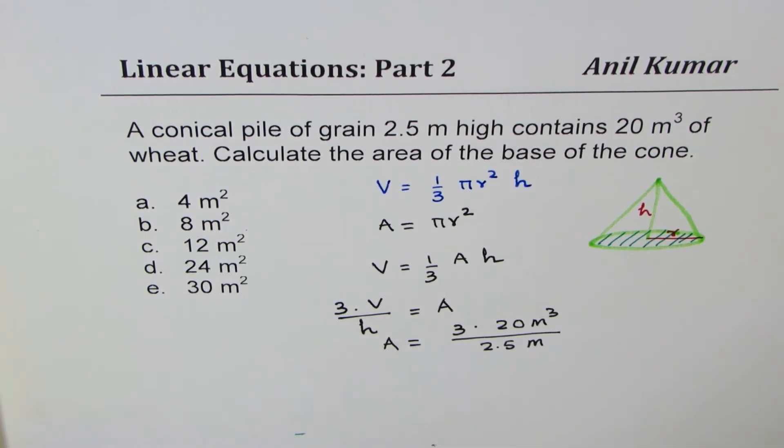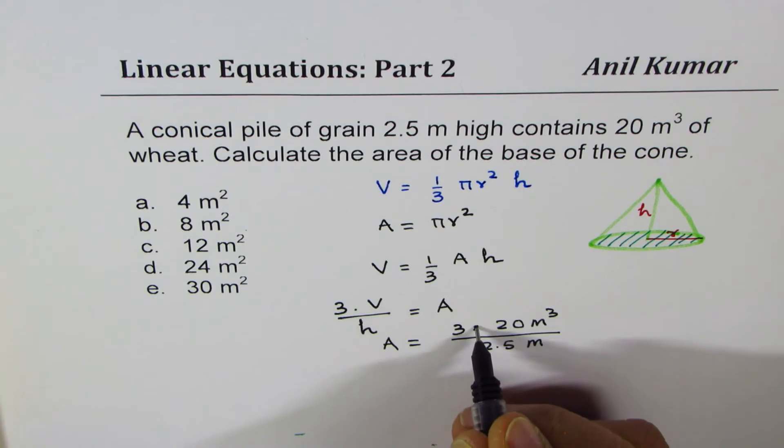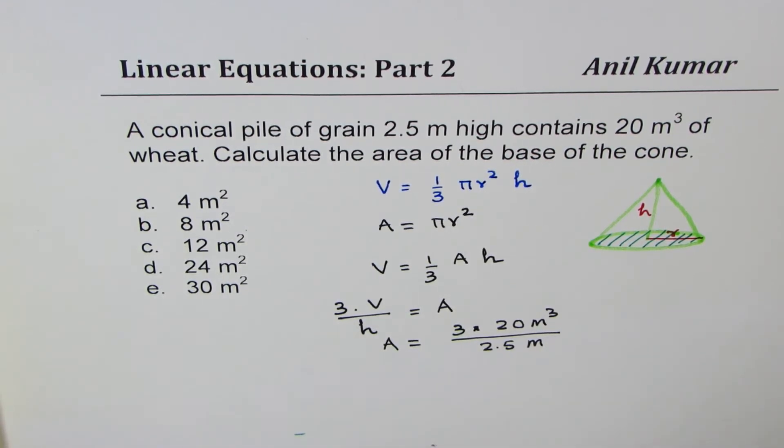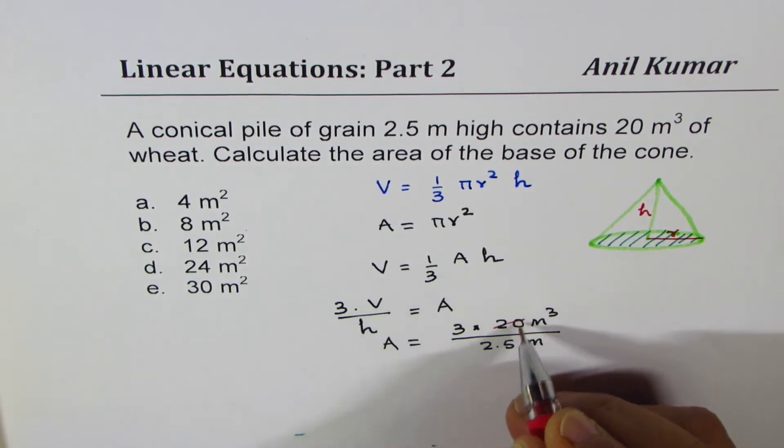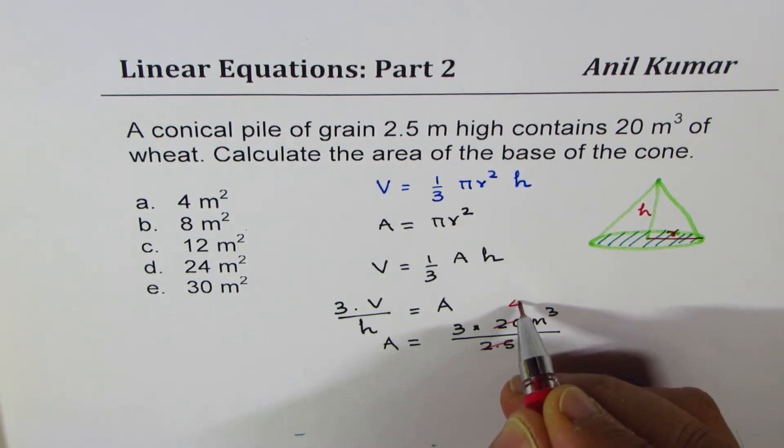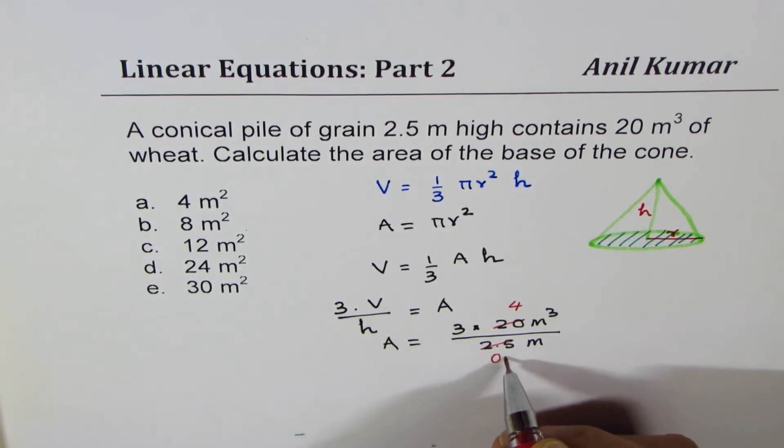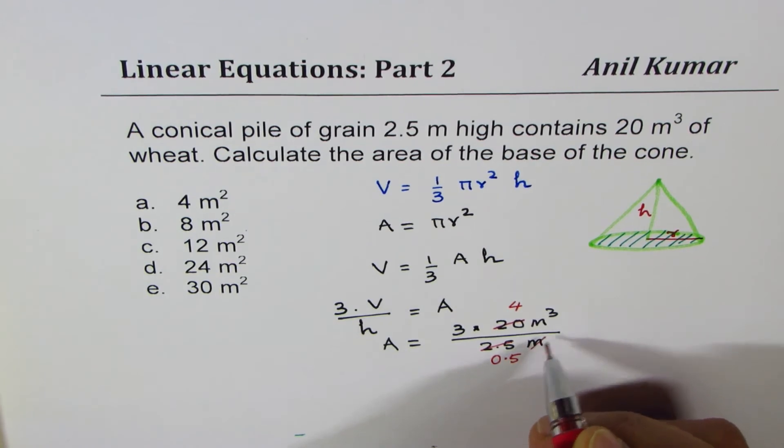Now you can calculate. You can simplify this by dividing both by 5, we get 4 and 0.5. Cubic meters simplifies to square meters.